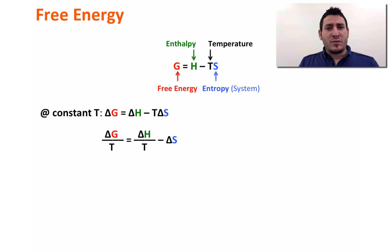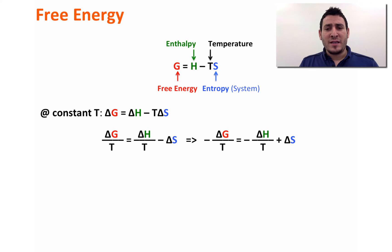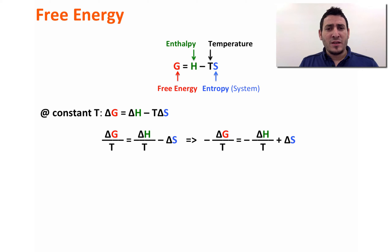Now if we divide both terms by temperature, we get ΔG divided by T is equal to ΔH divided by T minus ΔS. Multiplying by a negative sign, we get minus ΔG over T is equal to minus ΔH over T plus ΔS. Note that we are not using the subscript system or surroundings because all these functions belong to the system.